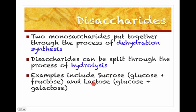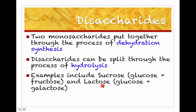Lactose is milk sugar. Some people don't have the ability to break this down — people who are lactose intolerant actually have to take an enzyme to help them break down the lactose. Lactose is made by combining a glucose and a galactose; those are the two monomers that build the disaccharide lactose.